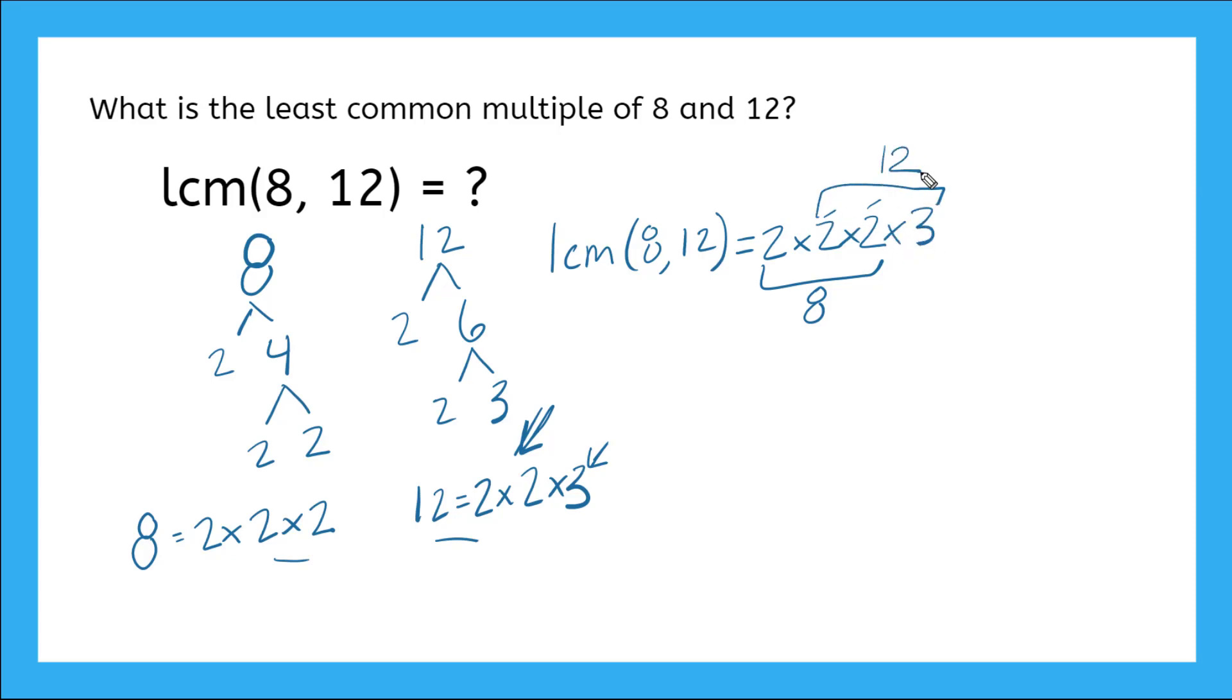So I have my 12 here, and then if I multiply all of these factors out that make up my 8 and my 12, I'll have the smallest common multiple of 8 and 12. So I know 2 times 2 is equal to 4, and 2 times 3 here is equal to 6, and 4 times 6 is equal to 24. So 24 is the least common multiple of 8 and 12.